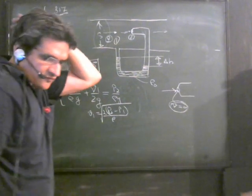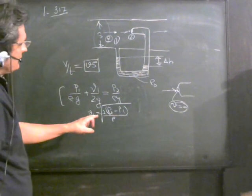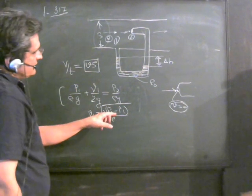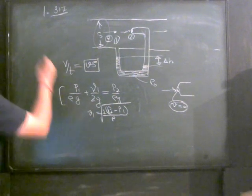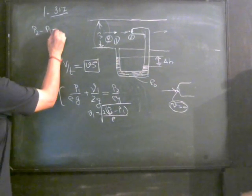To find the rate of flow of volume per unit time, we have to multiply this velocity with the cross-section area. Another thing is p₂ - p₁, which we have to find out.